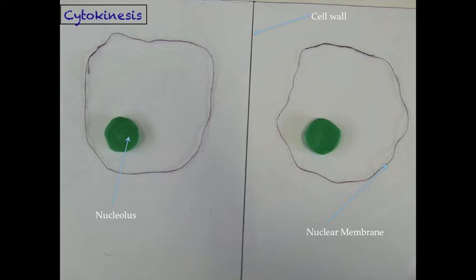We have cytokinesis, which is the division of the cytoplasm. During cytokinesis, we see the two nuclear membrane-bound cells, each containing a nucleolus, separated by a cell wall.